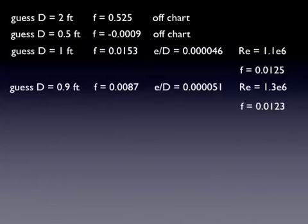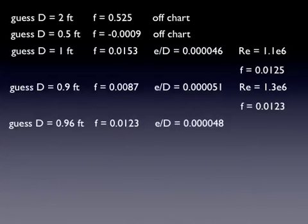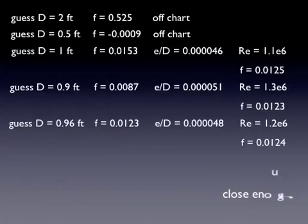This is another approach you can take, this kind of bracketing approach. So I'm going to pick a number sort of in the middle, 0.96. That gives me this F and a relative roughness of this and a Reynolds number of that. And then off of the Moody diagram, I get an F that's a pretty close match. And I'm going to stop right there, say that's close enough. And so my answer is D, the pipe needs to be 0.96 feet.